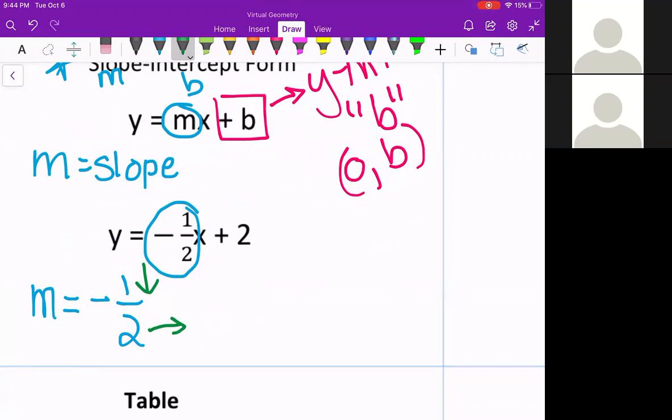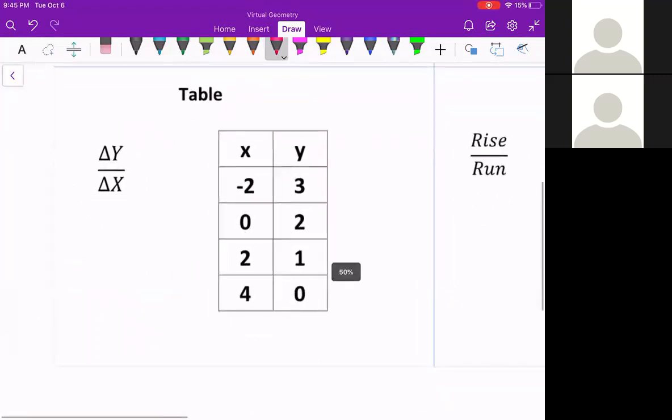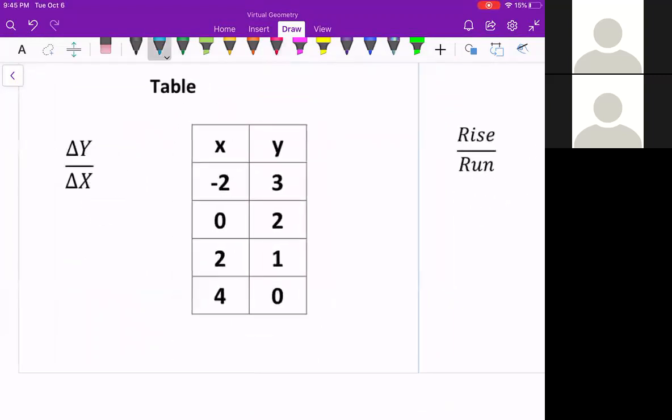And then we have your y intercept. Because it is a plus 2, our b value is a 2, and as a coordinate, (0, 2). So that's when we're looking for that information out of the equation. So let's go straight down and check out how to pull this information out of the table.